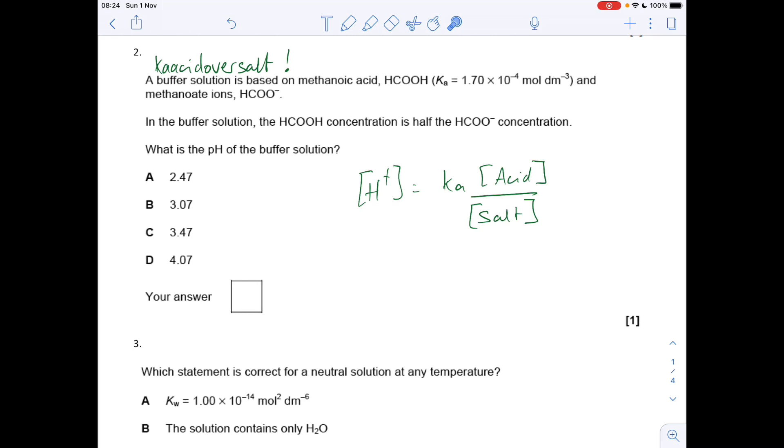We're given the Ka value and we're told that the acid concentration is half the salt concentration. Feeding those numbers in: 1.7 times 10 to the minus 4. I'm saying that the acid concentration is 1, which is half of the salt concentration, so that's 2. That gives us an H+ concentration of 8.5 times 10 to the minus 5. We minus log that and we get an answer of 4.07, so the answer was D.